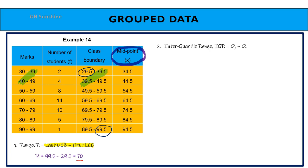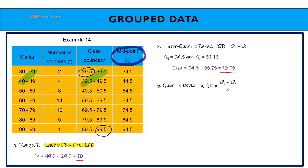Next, inter-quartile range: Q3 minus Q1. From the previous measures of location example, Q3 equals 74.5 and Q1 equals 55.75, therefore IQR equals 18.75. For quartile deviation, using the same formula Q3 minus Q1 divided by 2, substituting the values gives QD equal to 9.375.